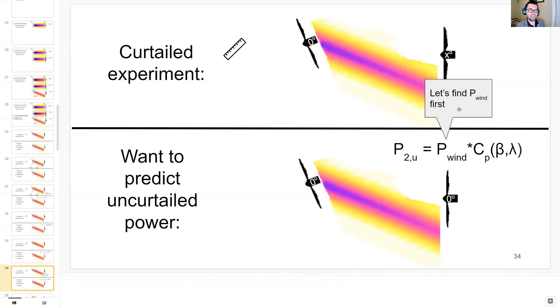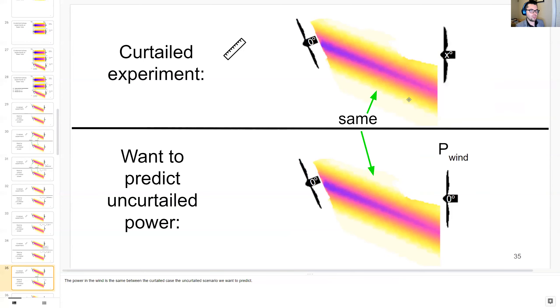But first let's find this power in the wind. Since the power of the wind is the same for the curtailed experiment, if we can predict it in the curtailed experiment, it'll be the same as the uncurtailed. Wind power is expressed as one half air density rho times swept area A times the cube of wind speed U.